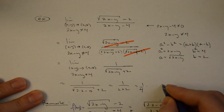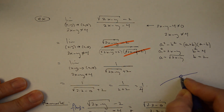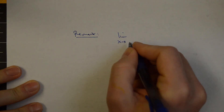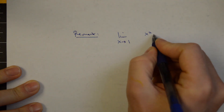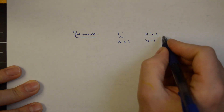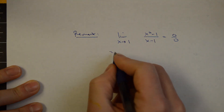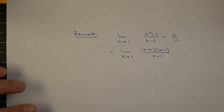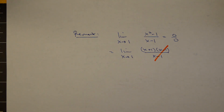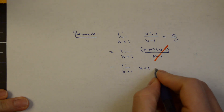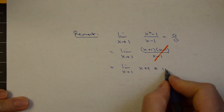This case is very similar to a single-variable example with a removable singularity: the limit as x approaches 1 of (x²−1)/(x−1). Although the function is not continuous or defined at x=1, the limit value still exists. We factor the difference of squares, cancel the removable singularity, and rewrite as the limit as x→1 of (x+1), evaluating to 1+1 = 2.